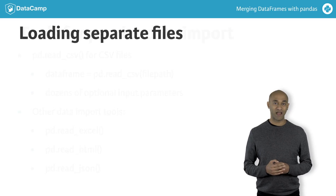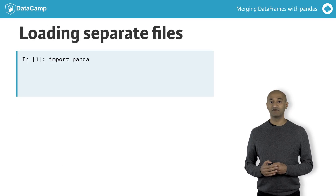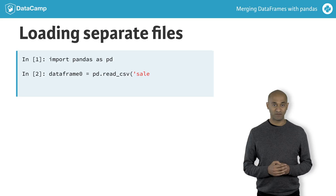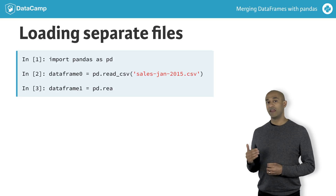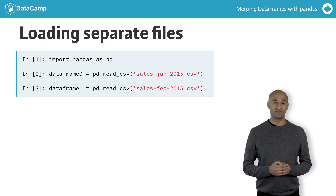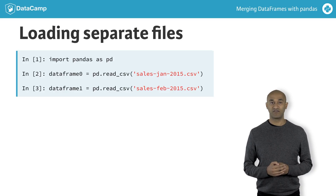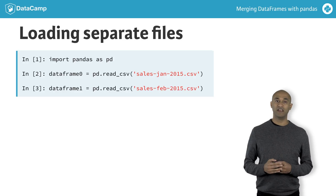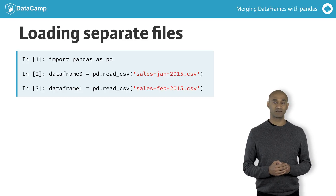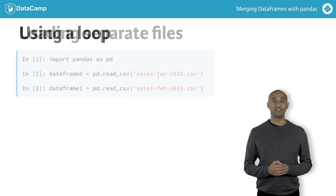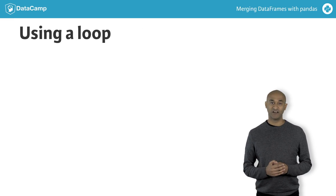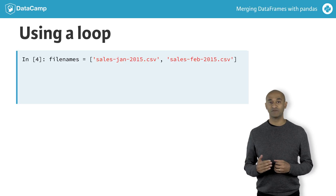To read multiple files using Pandas, we generally need separate data frames. For example, here we call pd.read_csv twice to read two CSV files — sales January 2015.csv and sales February 2015.csv — into two distinct data frames. It's generally more efficient to iterate over a collection of file names. With that goal, we can create a list of file names with the two file paths from before.